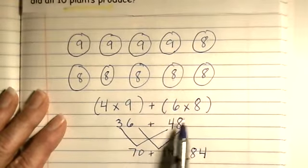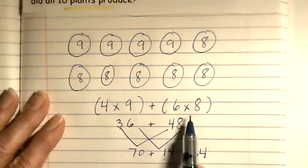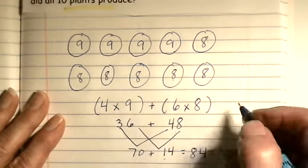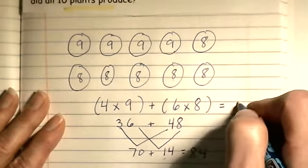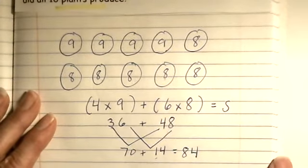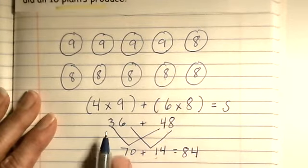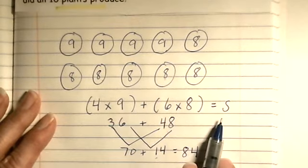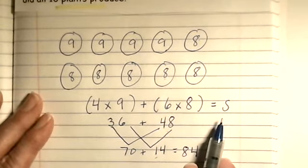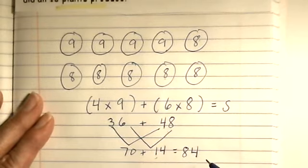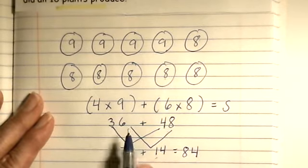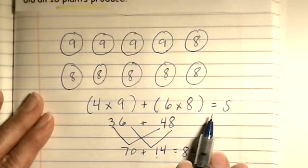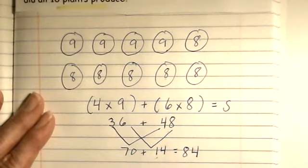Now, I need to go back here, because I realized something here. This is actually my equation. I'm going to put equals S for strawberries. You really need to practice, and I really need to practice with you, making sure we write our equations, because sometimes they will ask you which equation shows this situation. So, four times nine, plus six times eight, equals S for strawberries.